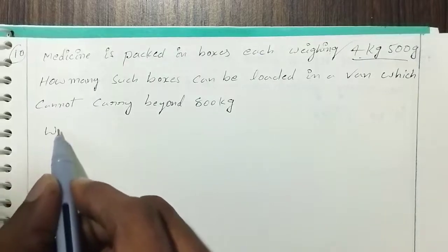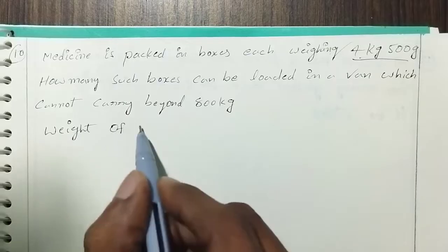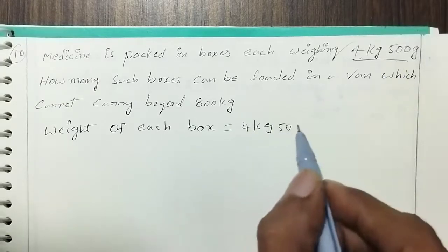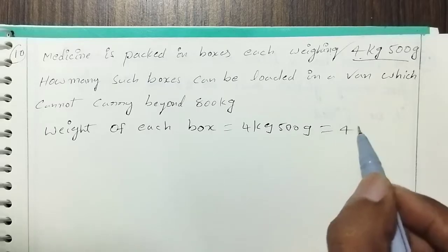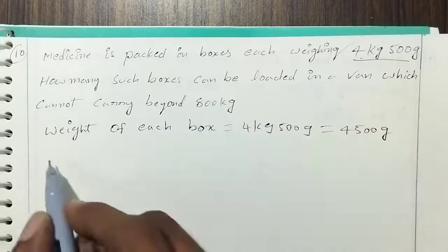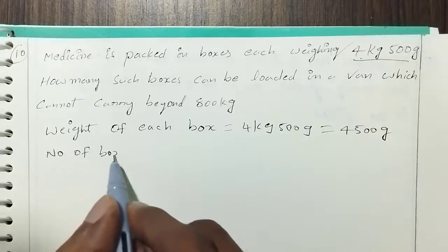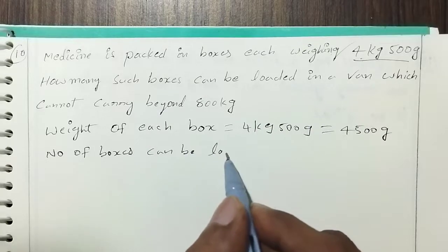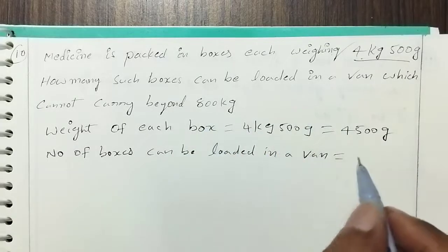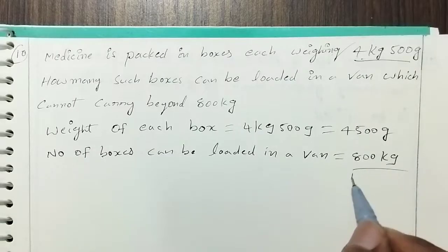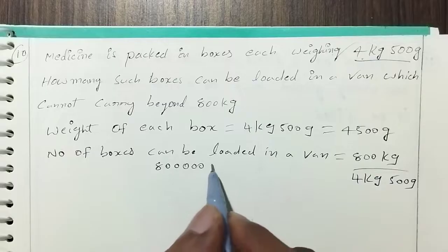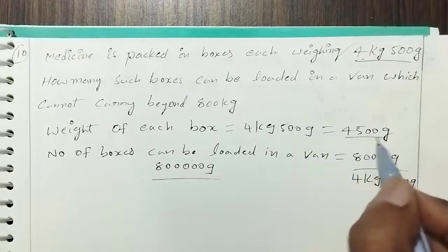Weight of each box: 4 kg 500 grams = 4,000 + 500 = 4,500 grams. Number of boxes that can be loaded in the van: 800 kg = 800,000 grams divided by 4,500 grams per box.